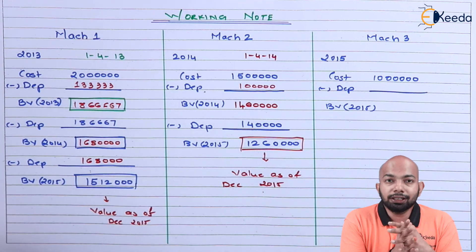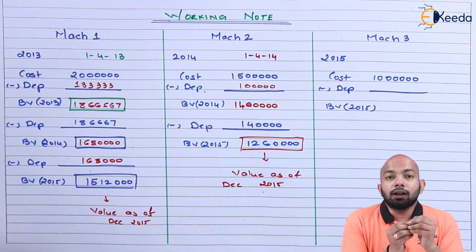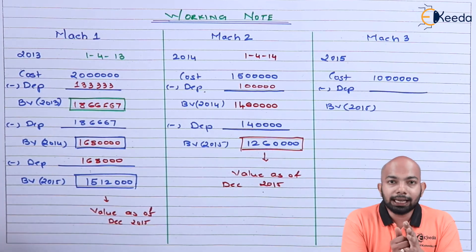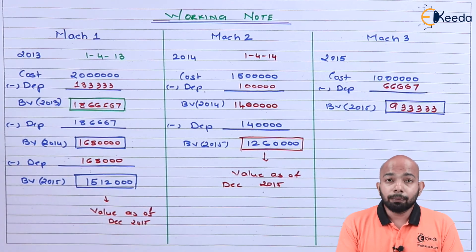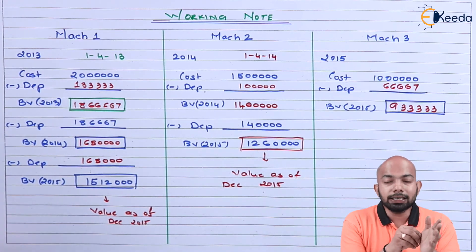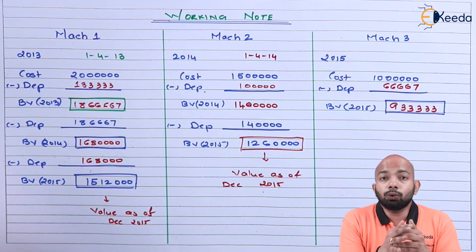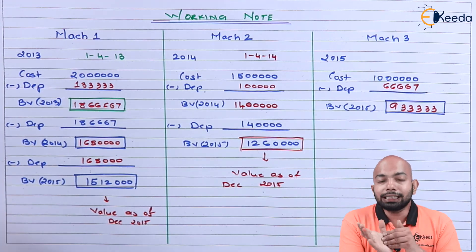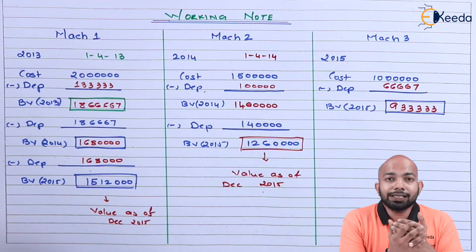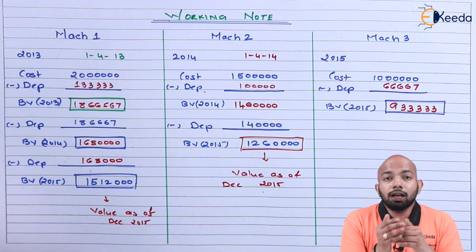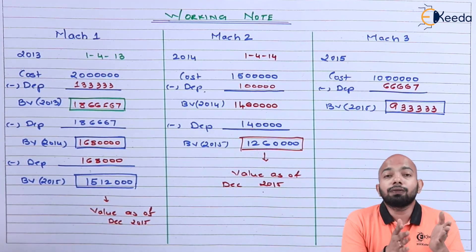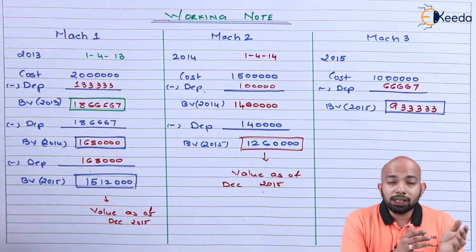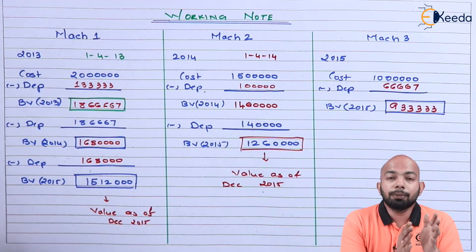For Machine 3, we only calculate the first detail of 8 months. The original cost was 10,00,000, and depreciation is calculated only for 8 months because this machine was purchased on 1st April 2015. From 1st April 2015 until December 2015, the depreciation is 66,667. Subtracting that from the cost of 10,00,000 gives a total book value of 9,33,333. We have now calculated the value of all these assets as of December 2015.